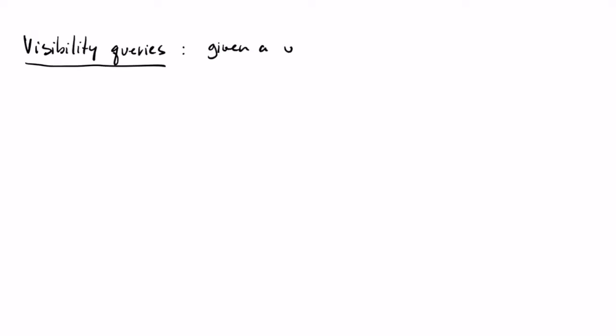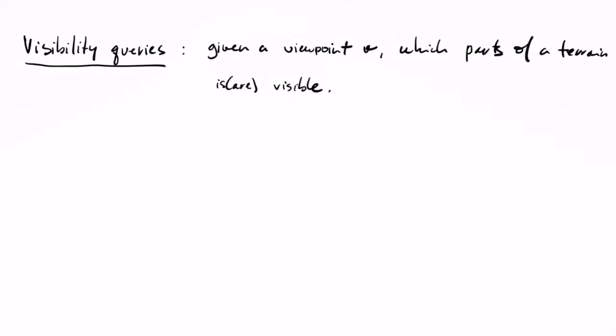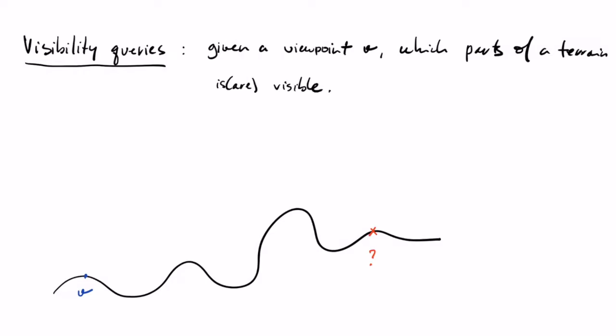In this lesson we discuss visibility queries. Given a viewpoint V, we want to know which parts of the surrounding terrain are visible from that point. This is a fairly simple problem: we basically need to draw a direct line between two points to see if V would see a given point. For example, on the left it would, and the second one no, because there's a mountain between them.